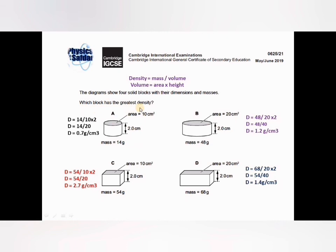So which block has the greatest density? Block A is 0.7, block B is 1.2, block C is 2.7, block D is 1.4. Option C is the correct answer. Thank you for listening — keep watching Physics with Software for better results in your exam. Good luck!